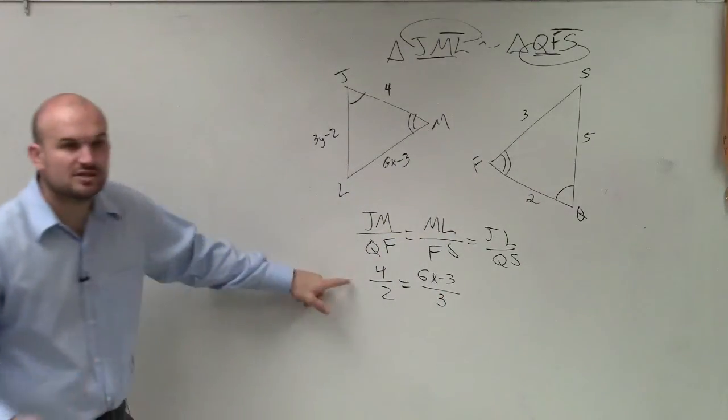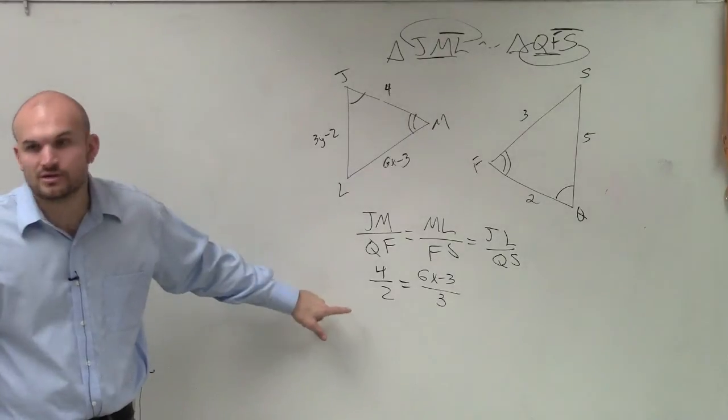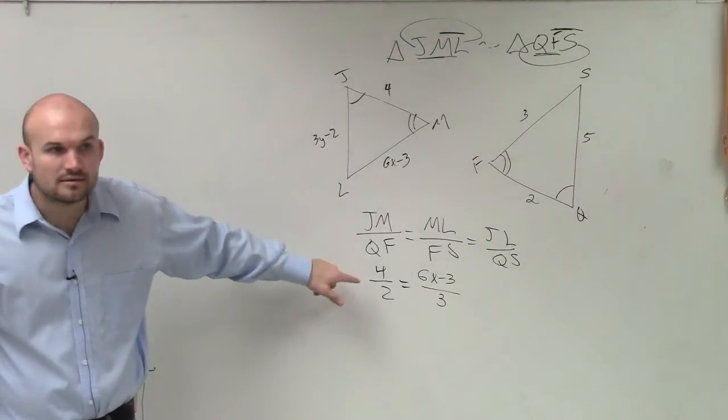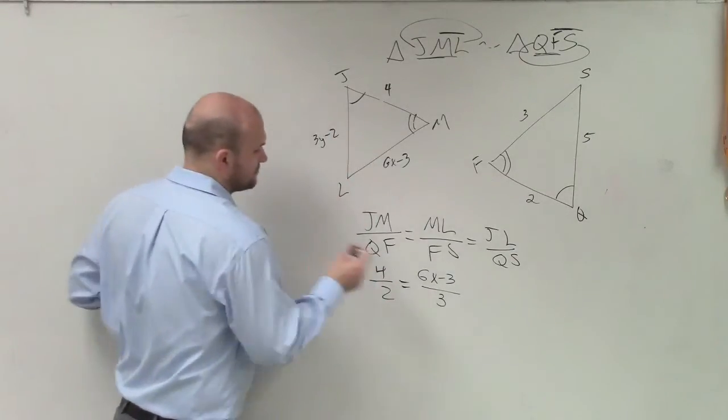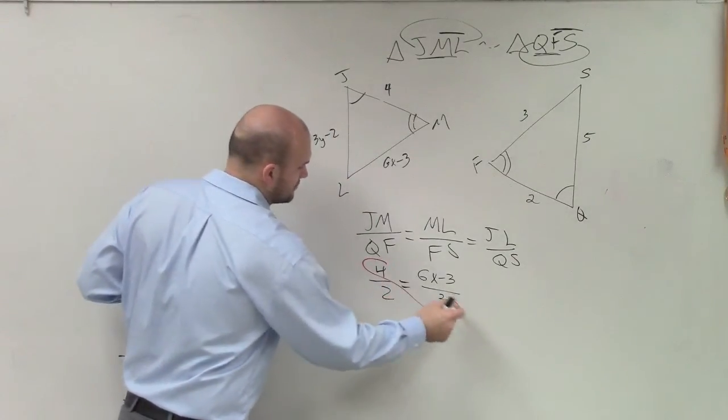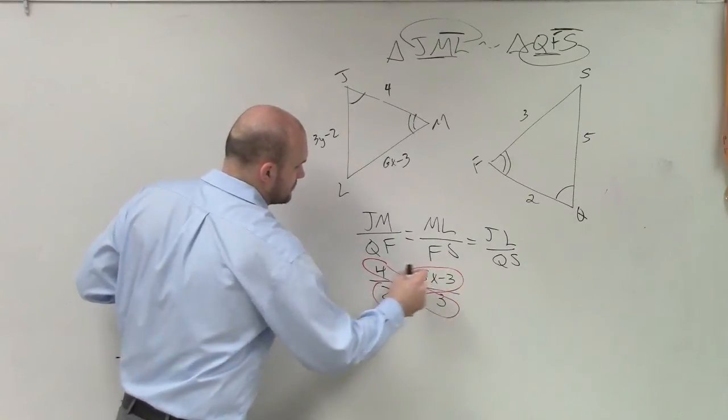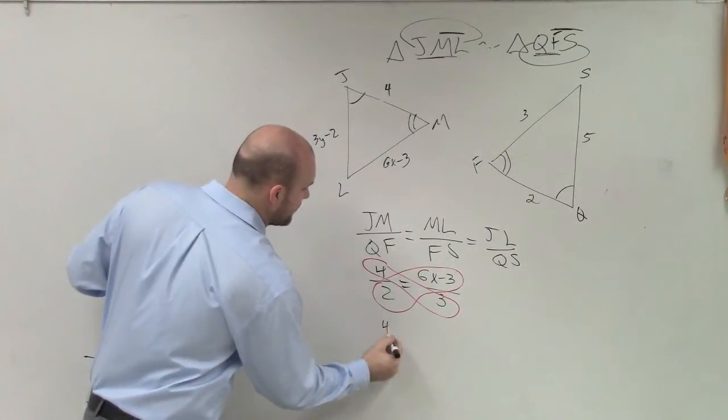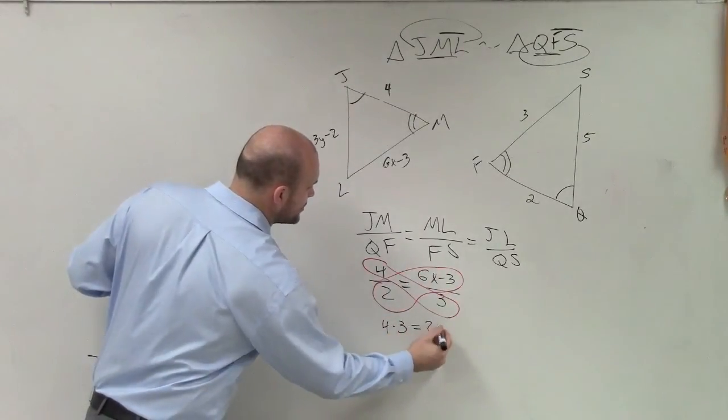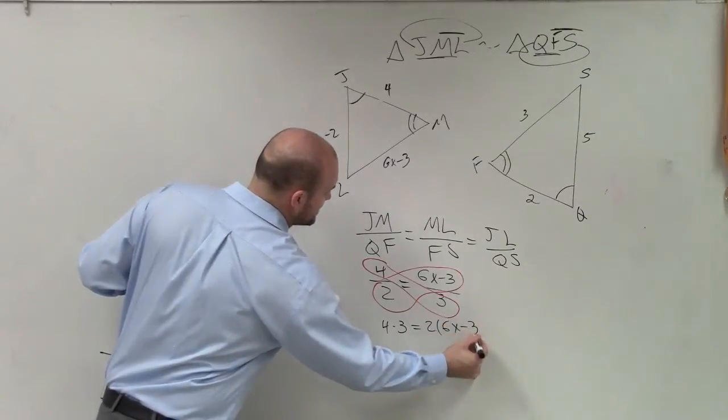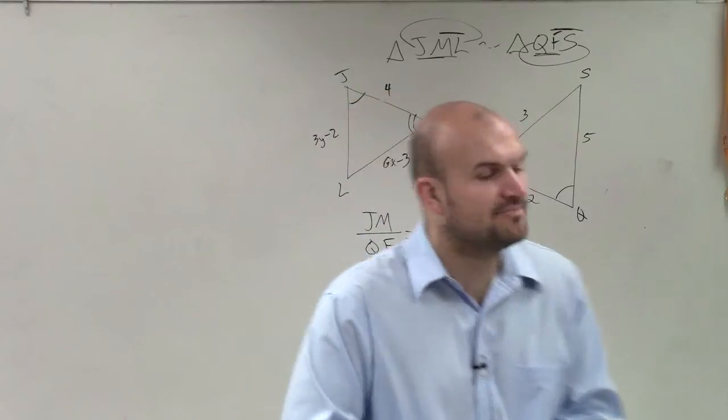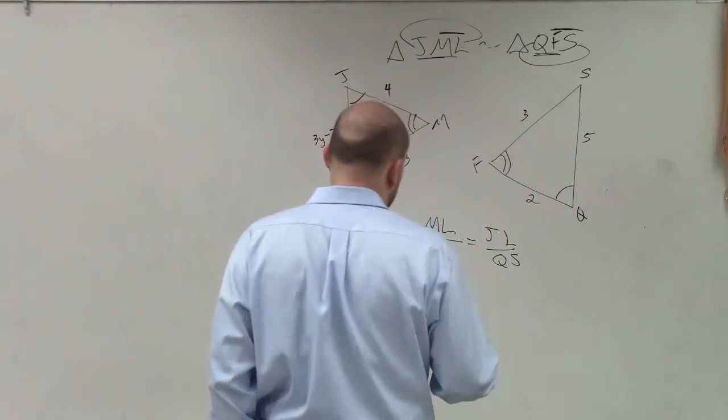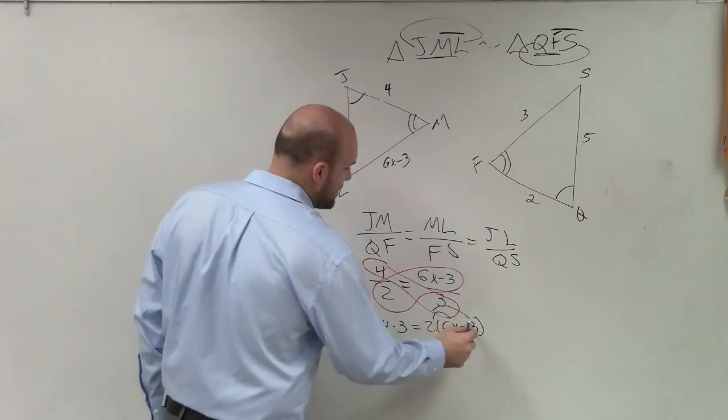Can I solve this equation now as it is, by using what we did last night in our homework? Yeah, right? We can now apply our cross products. So now I can say 4 times 3 is equal to 2 times 6x minus 3. Now I had a student that said, ah, I didn't know what to do when you had that binomial. When you have the binomial, we need to be very careful and make sure that we apply distributed property.